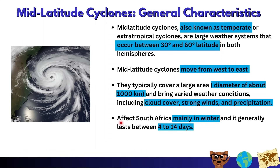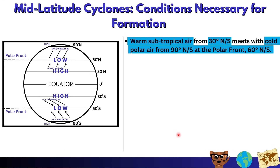Mid-latitude cyclones affect South Africa mainly in winter and generally last between 4 to 14 days. Now let's look at the conditions necessary for formation. Our first condition is that warm subtropical air from 30 degrees north and south meets cold polar air from 90 degrees north and south at the polar front, which is located at 60 degrees north and south.